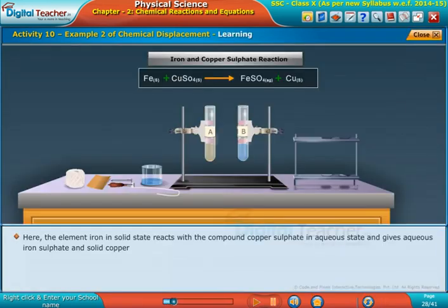The element iron in solid state reacts with the compound copper sulfate in aqueous state and gives aqueous iron sulfate and solid copper.